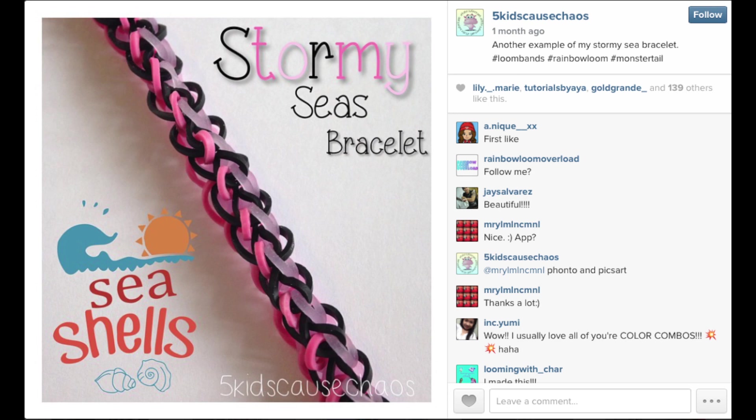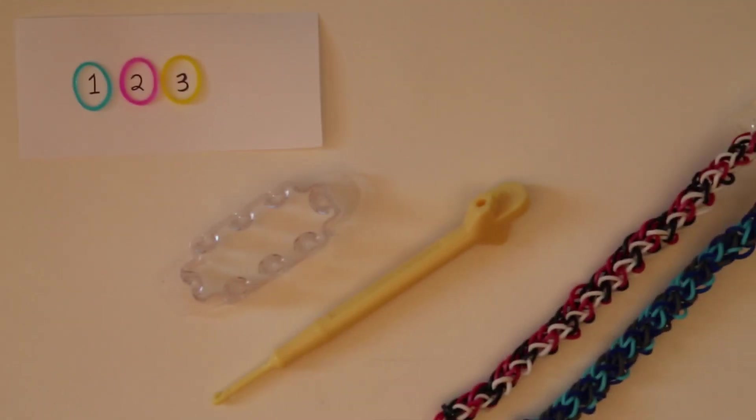This bracelet is made using three colors of rubber bands, and you need three pegs. The monster tail works really easy for this. You could also use Rainbow Loom's finger loom, or you could even use a regular loom. Now, I've numbered the colors of the bands that I'm using to make it a little easier for you to follow along.